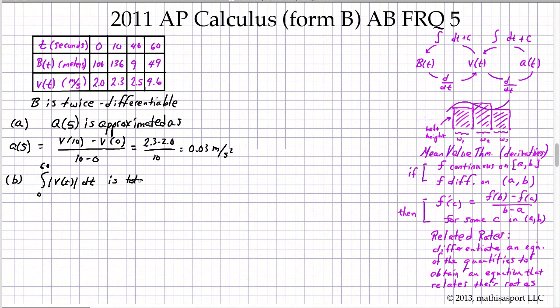Well, putting in our values, we have 2.0 times 10, this is 2.3 times 30, and this is going to be 2.5 times 20. And so we have 20 plus 69 plus 50, and that's going to equal 139 meters.